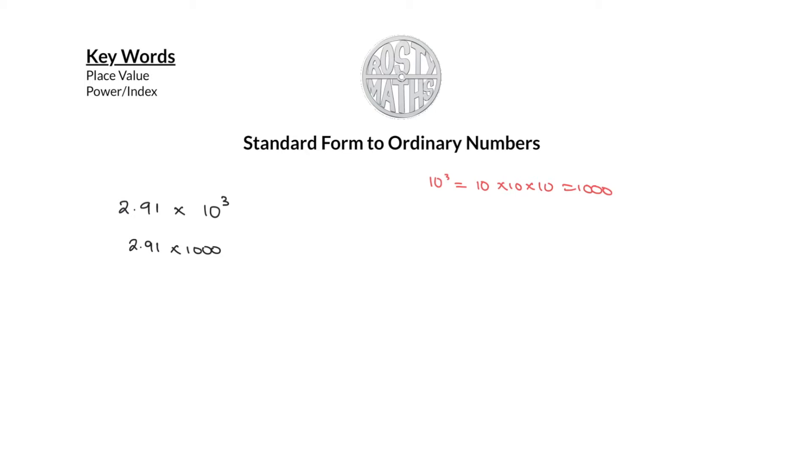So what I'm actually doing is multiplying that by a thousand, and going back to primary school, we know if we multiply a number by a thousand, that number will move along the decimal chart three places, therefore giving me 2910. And that would have been us done. But when you're sitting in an exam and you want to get this done real quick, then this is what we're actually doing.